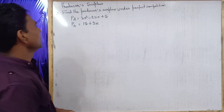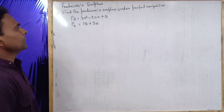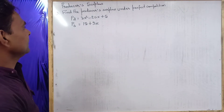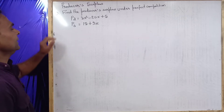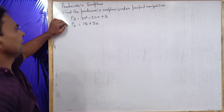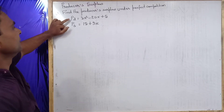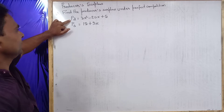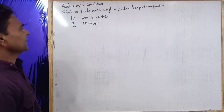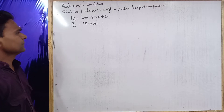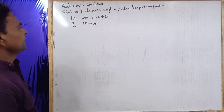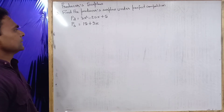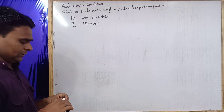I have written a question: Find the producer surplus under perfect competition with the given demand and supply functions. The demand function is Td equal to 3x squared minus 20x plus 5, and the supply function is equal to 15 plus 9x.